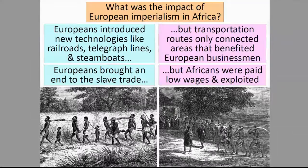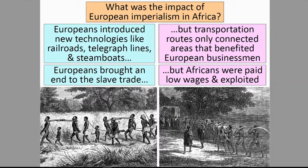What was the impact of European imperialism in Africa? Europeans introduced new technologies like railroads, telegraph lines, and steamboats, and brought an end to the slave trade. However, transportation routes only connected areas that benefited European businessmen. Although they brought an end to the slave trade, Africans were paid low wages and often exploited.